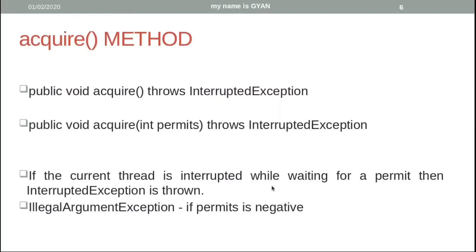If the current thread is interrupted while waiting for a permit, the acquire method throws InterruptedException. The acquire method also throws IllegalArgumentException if the value of the permit is negative.